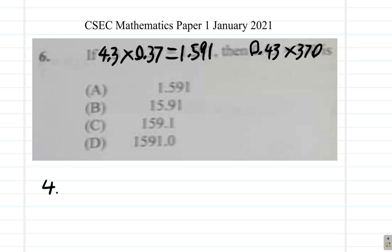You had 4.3 multiplied by 0.37 equal to 1.591. Now, what is 0.43 by 370? Now here, one way you can look at it is to say 0.43 is a bit less than half of 370, and half of 370 is what? Half of 300 is 150. So a little less than half of 370 should be somewhere in the 150s.